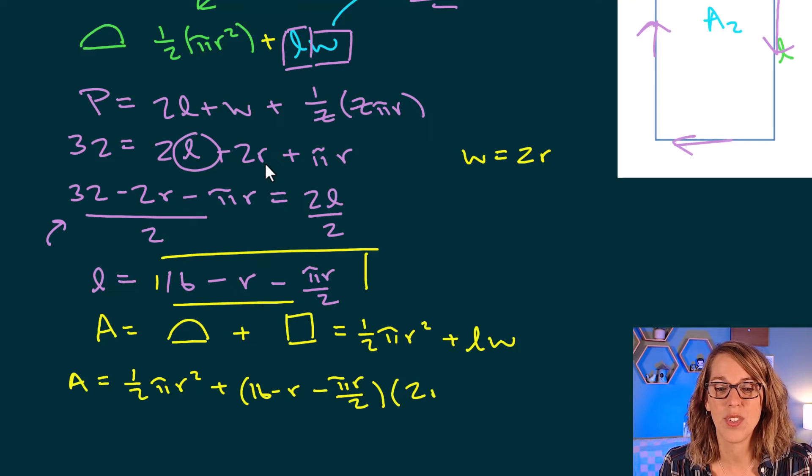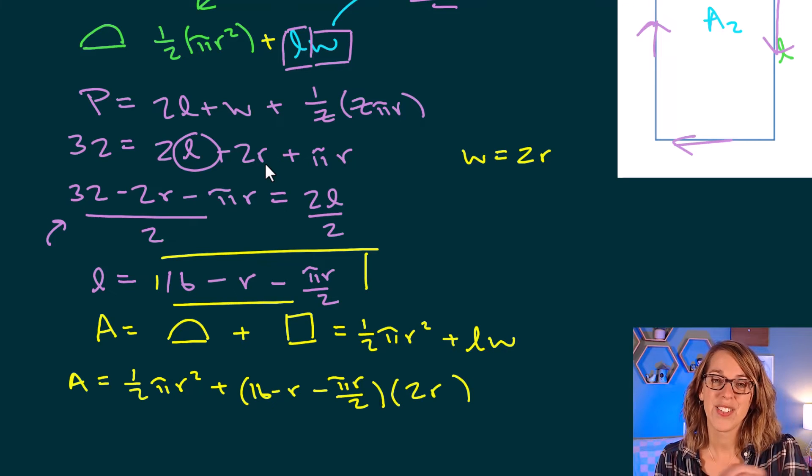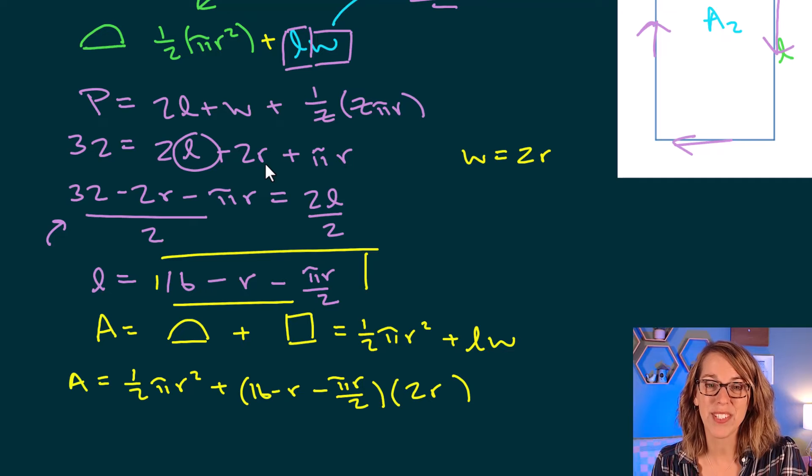So I can write that now as 2 times the radius. Notice how I've got a single variable now on the right-hand side of my equation.